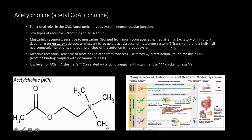Do not forget that. All muscarinic receptors act via a second messenger system, specifically with a transmembrane alpha helix. Both branches of the autonomic nervous system — the sympathetic nervous system and the parasympathetic nervous system — use acetylcholine, as does the neuromuscular junction.